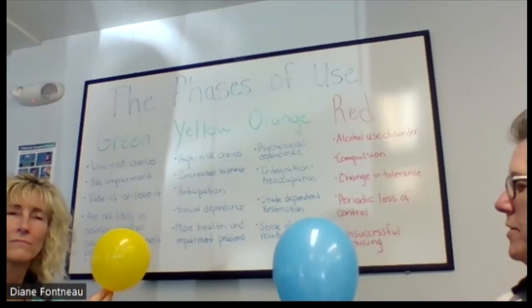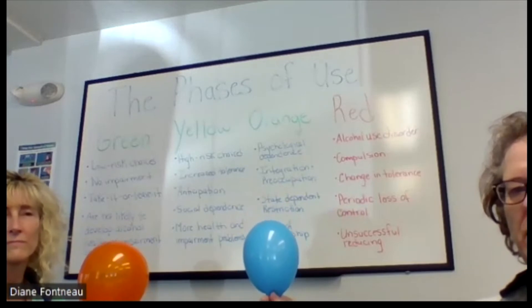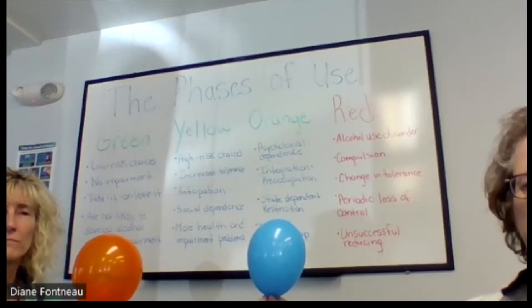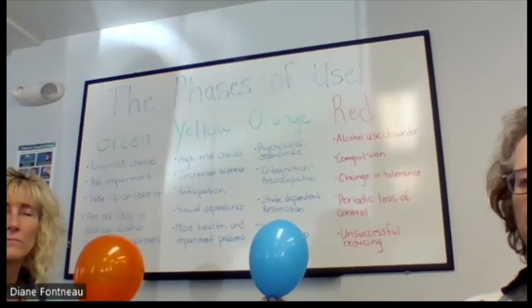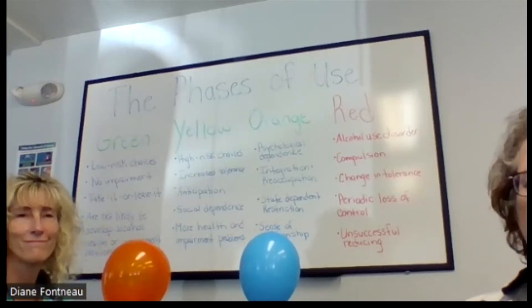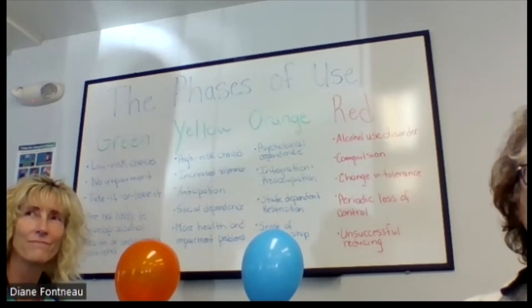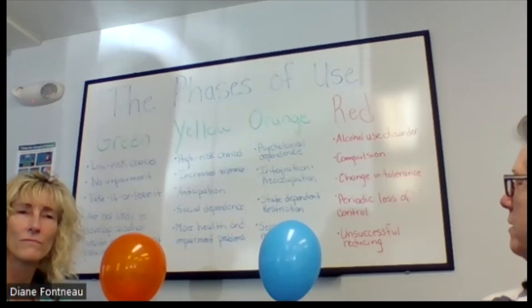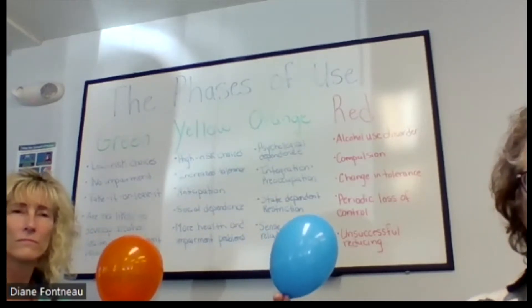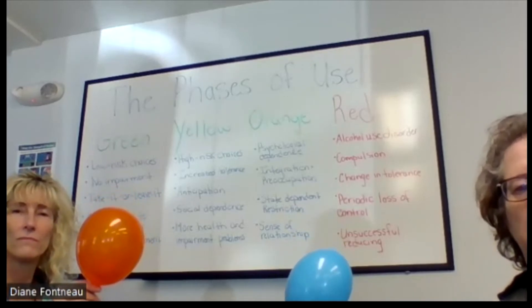As you progress forward into the orange stage of alcohol use, your blue healthy self is shrinking in decision-making. The orange stage, or the alcohol-induced stage, becomes prominent and starts driving more of your decision-making. You develop a psychological dependence. You have an integration and preoccupation with alcohol — you think about it frequently, hours or days ahead. You may be preoccupied with it quite a bit, and have a state-dependent restriction and sense of relationship to alcohol as the orange grows.